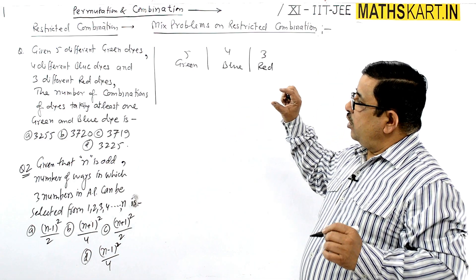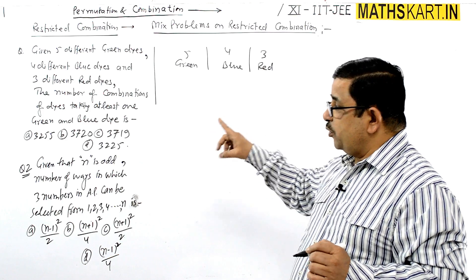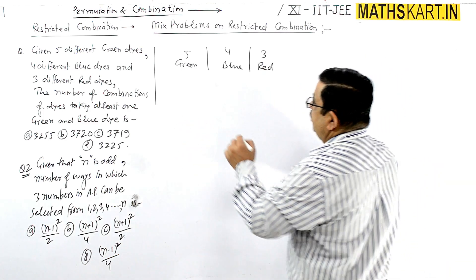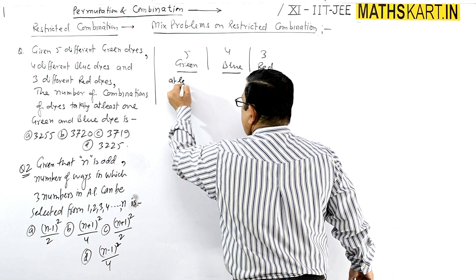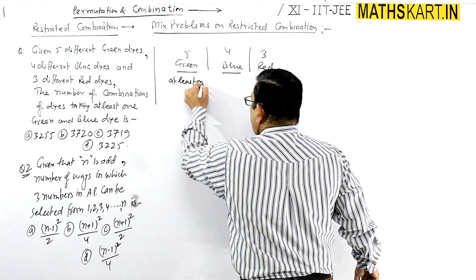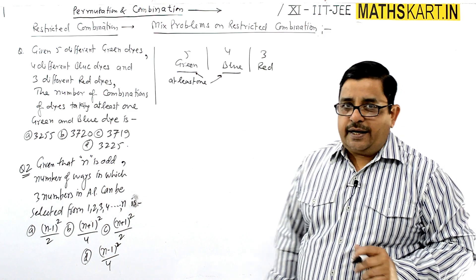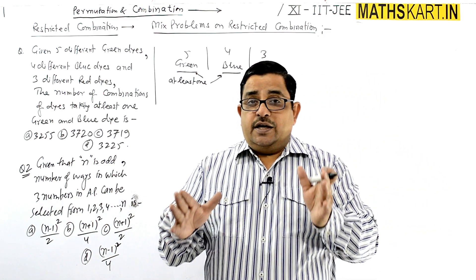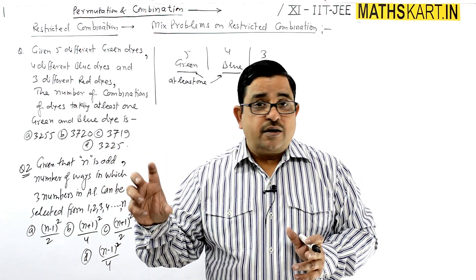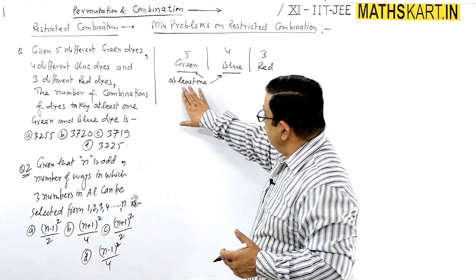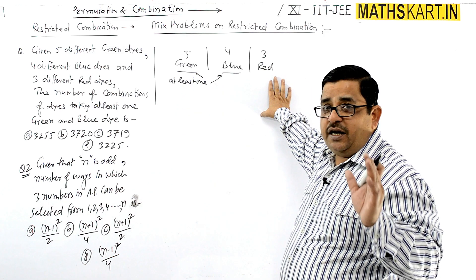The number of combinations of the dyes taking at least one green and one blue. At least one green and at least one blue is required. If we have to take at least one green and one blue, that means there is no condition attached to the red dyes.